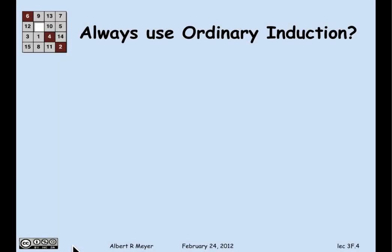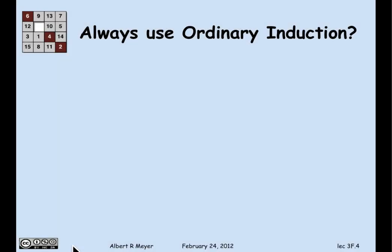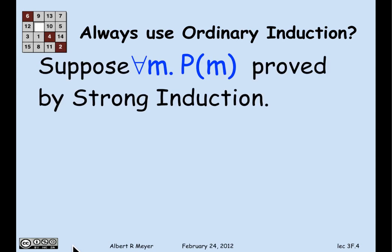There's another perspective which is interesting and maybe surprising: why not always use ordinary induction? How do you replace strong induction with ordinary induction? Suppose that you've proved for all m, P of m, using strong induction with induction hypothesis P of m.